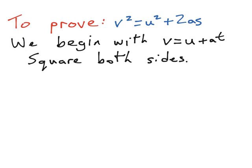This is the third proof of our equations of linear motion. We're trying to figure out the derivation of the v squared equals u squared plus 2as formula.